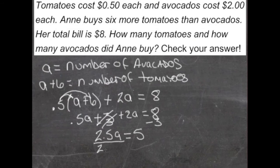That'll give us 2.5a is equal to 5. Divide both sides by 2.5. That gives us a is equal to 2.